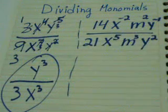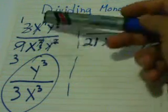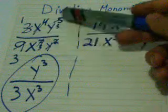So we simplify numbers with numbers, 3 with 9, then x^4 with x^7, and then y^5 with y^2.